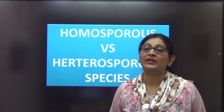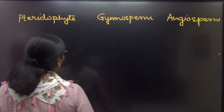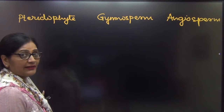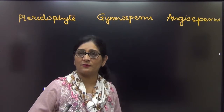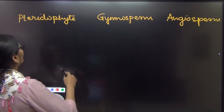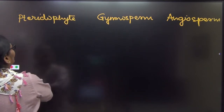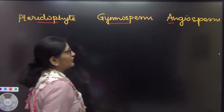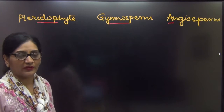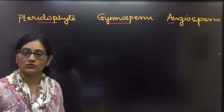What is heterospory and what is homospory? It is only in three types of plants — pteridophyte, gymnosperm, and angiosperms — where the main plant body is a sporophyte. In all three plants, the main plant body is a sporophyte. So obviously, if the plant is a sporophyte, it is going to form spores.